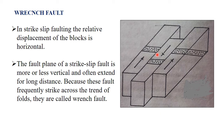In wrench fault, the movement can be horizontal or vertical. In the image we are seeing horizontal movement, but it can also show vertical movement. The displacement can range from meters to kilometers — it is totally dependent on the intensity of the tectonic forces. More intensity means more displacement, and less intensity means less displacement. Because of this appearance, we call this type of structure the wrench fault.